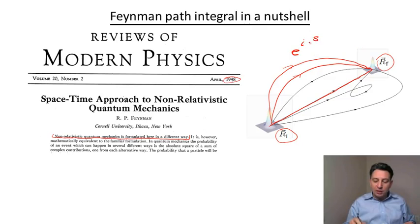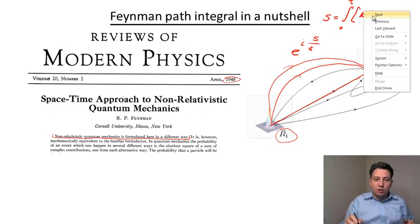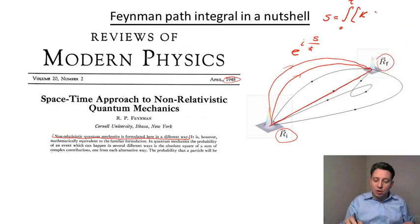of i times classical action divided by the Planck constant. So classical action here, we're going to discuss it in more detail later, but just to remind you the classical action is an integral from 0 to t of the Lagrangian, which is the kinetic energy, basically mv squared over 2, minus the potential energy times dt.